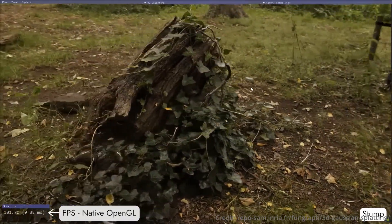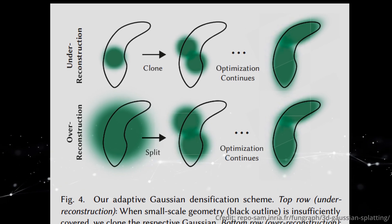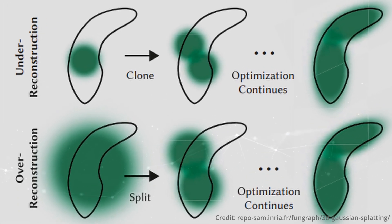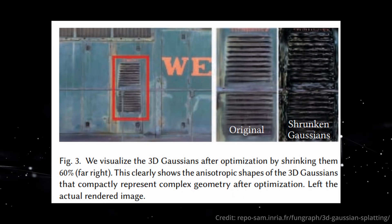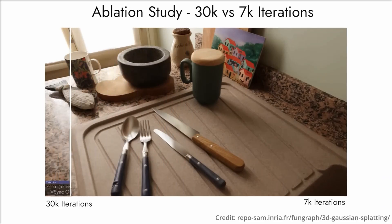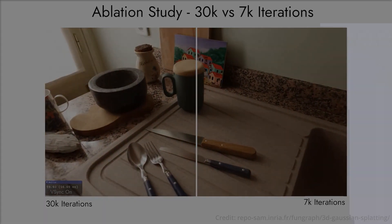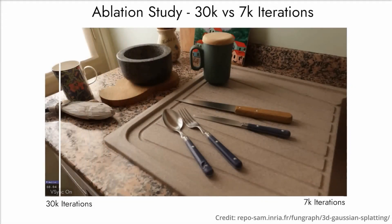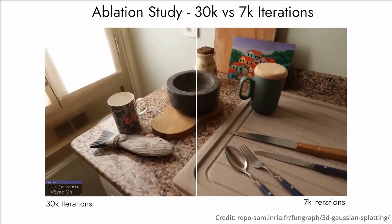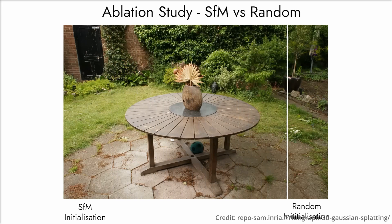Here lies another marvel of 3D Gaussian splats: its lightning-fast training. Shunning the cumbersome deep layers characterizing many AI techniques, this approach leverages stochastic gradient descent, streamlining the training procedure and dramatically ramping up its speed. This methodology thrives on a razor-sharp feedback mechanism — if the gradient signals a discrepancy, the system deftly navigates its way, splitting or cloning the Gaussian or tweaking its alpha. This intuitive rasterization error training strategy adeptly optimizes volumetric radiance fields, sidesteps redundant computations, and focuses on precision and quality. The results: unparalleled speed, a drastic reduction in errors, and an amazingly clear output.